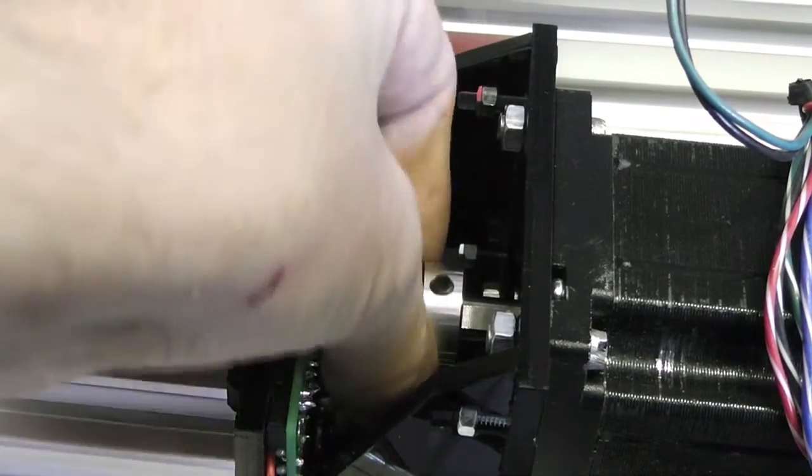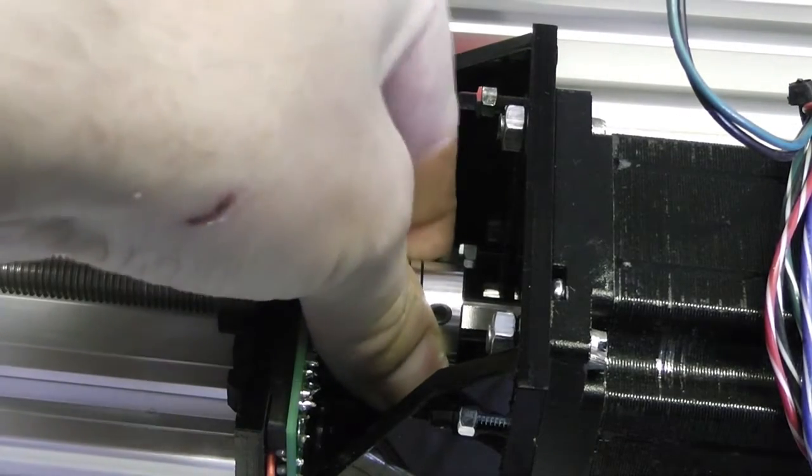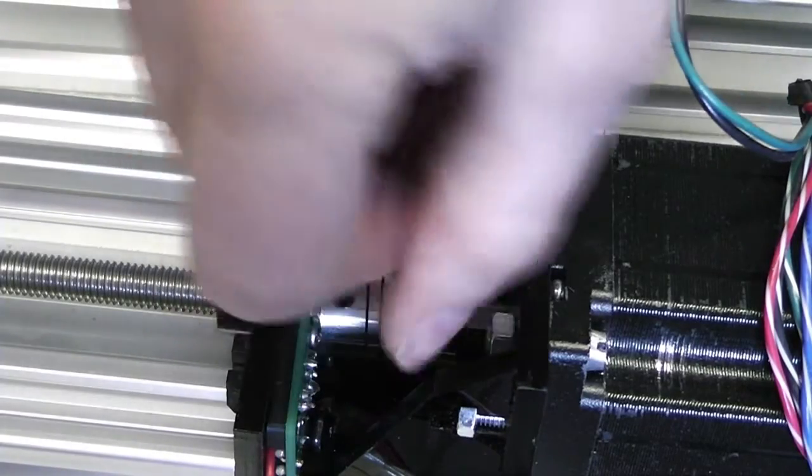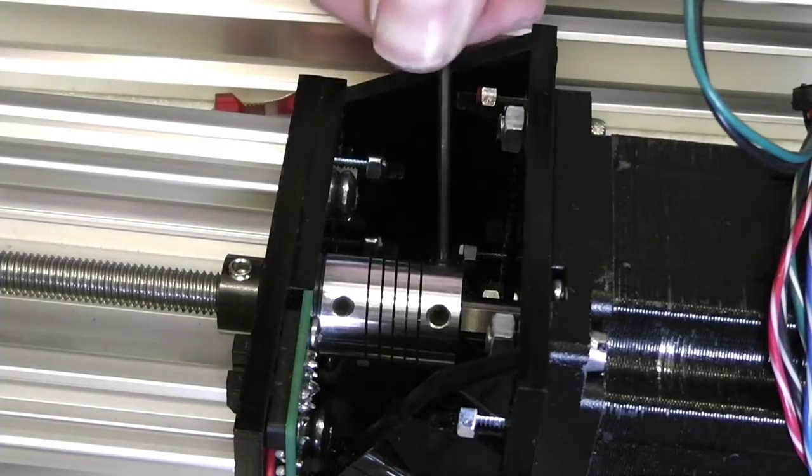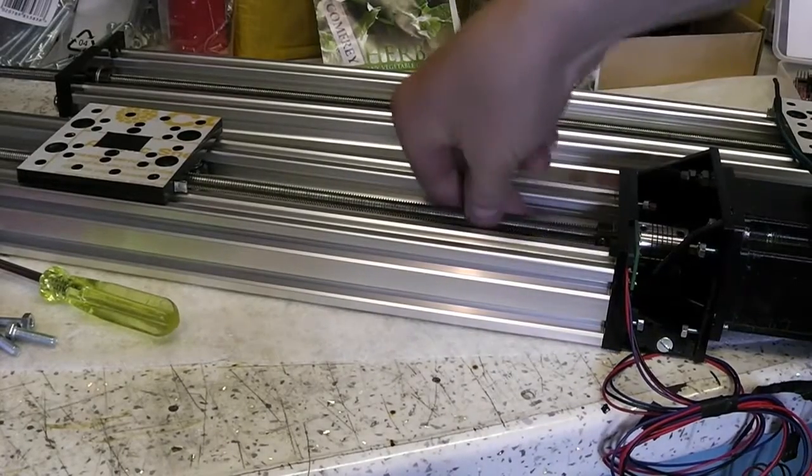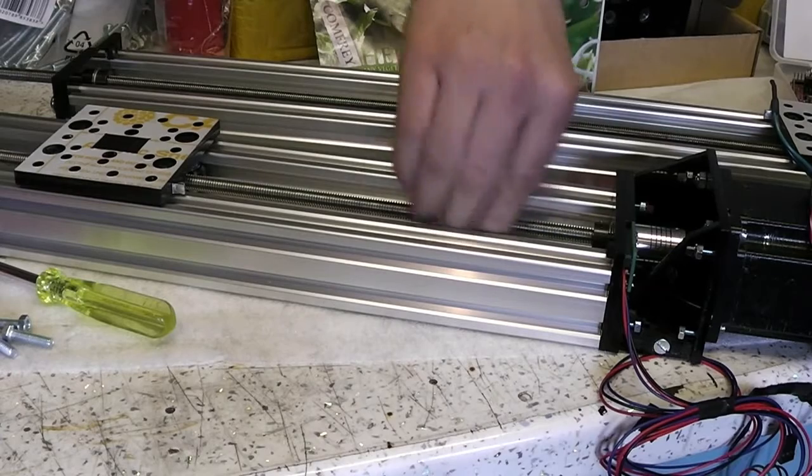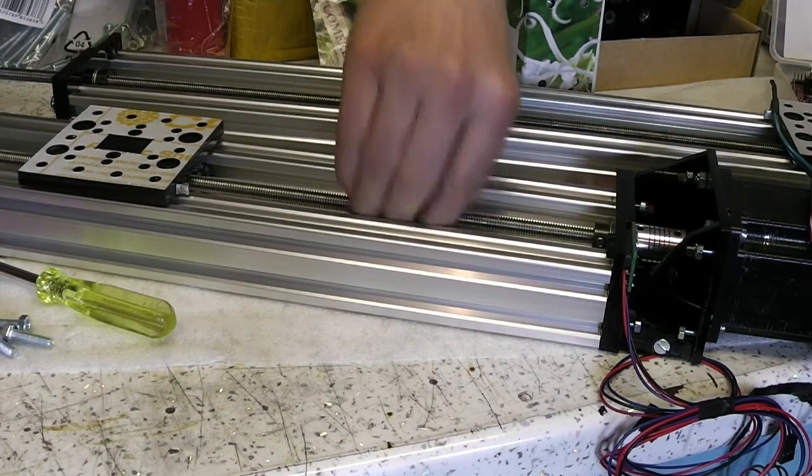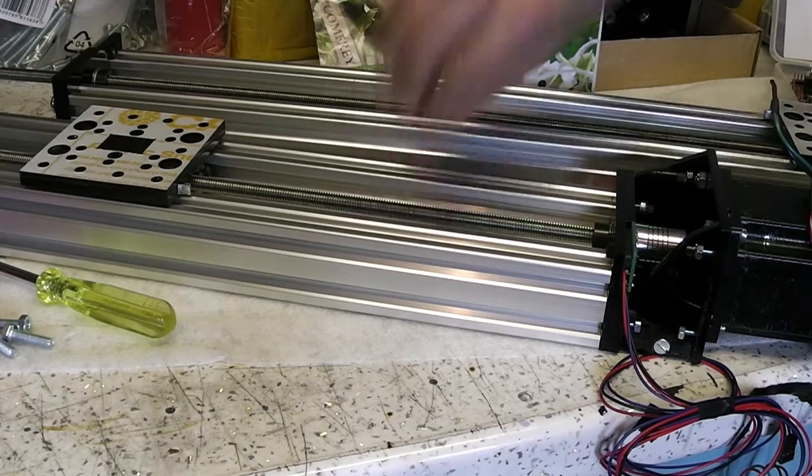Next I'm going to line up the grub screw on the coupler with the flat on the motor shaft and tighten that up. You can see that it'll turn with absolutely no wobble visible on the coupler. Whereas with the other design there was always a visible wobble no matter how hard I tried to get everything lined up correctly.